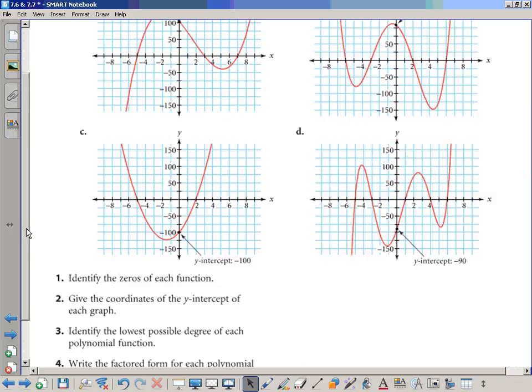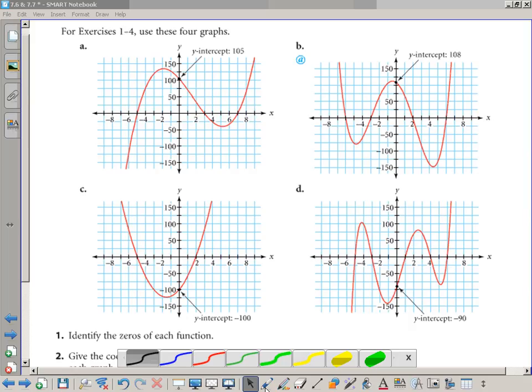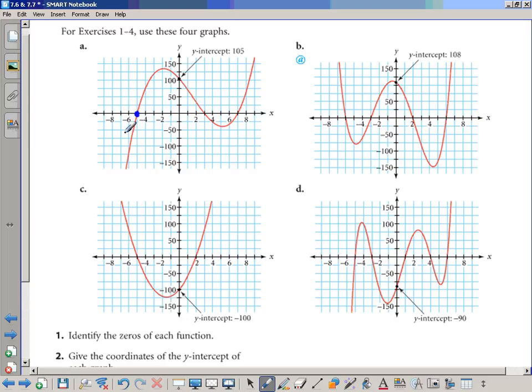So let's go ahead and do step one, identify the zeros of each function. To identify the zeros, we want to locate where the function crosses the x-axis. So for the first one, it's at negative 5, 3, and 7 for part A. For part B, the zeros are negative 6, negative 3, 2, and 6. So we've identified the zeros for each function in problems A and B.